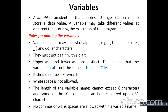A variable is an identifier that denotes a storage location used to store a data value. A variable may take different values at different times during the execution of the program. Sometimes the variable is also called the quantity — the storage location in memory where our inputted value is stored with the help of these variables, which are also called identifiers. During the execution of the program, we may change the values of these variables.